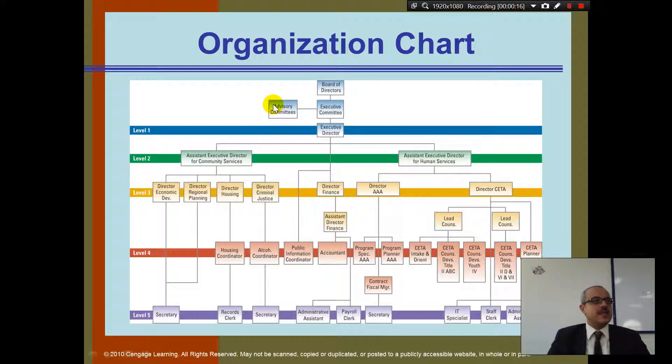You know what an advisory committee is - people who advise the management. Then we have the executive director. Under the executive director, we have the C-level, the chief officers.